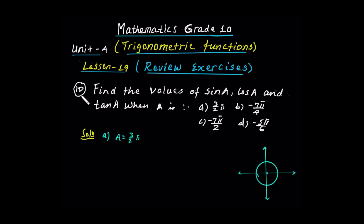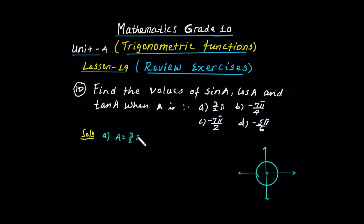Find the values of sine A, cos A, and tan A when A is 3π/2, negative 7π/4, negative 7π/2, and negative 5π/6. The answer is sine, cosine, and tan of 3π/2.